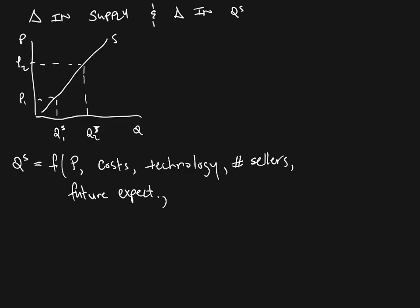Just like buyers care about future prices, so do sellers. The expectations of sellers about the future price of their product will affect how much they want to sell today. If they think the price is going to go up, they may want to hold on to whatever they're selling and wait to sell it once the price has gone up. So future expectations affect how much they want to sell today, as will the price of related goods or services. Sellers care not only about the price of what they are currently doing, but also about the price of other things they could be doing. If something else becomes more profitable, maybe you want to sell less of what you're currently making and make more of the other thing — so they care about the opportunity cost.